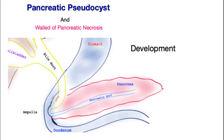This is a cartoon with a stomach, the bile tube, and the pancreas at the back of the stomach. Different causes can set off pancreatitis, which is activation of the pancreatic enzymes within the pancreas, leading to inflammation of the pancreas gland.